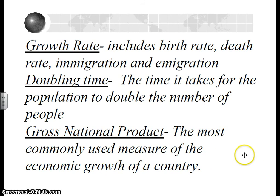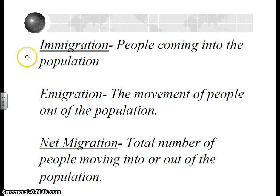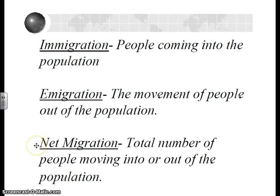Gross national product is the most commonly used way to measure the economic growth of a country. Immigration — I used the first letter to help me remember which is which because they sound so similar. Immigration is the number of people coming in to a population; it doesn't just have to be a country, it can be any segment of the population. Emigration — that's the amount of people exiting the population. Net migration is like the total of these two: it's just immigration minus emigration.